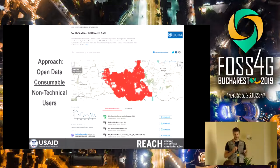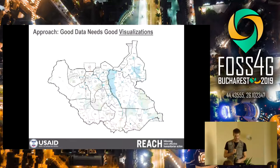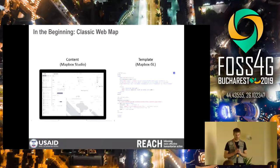Really what I want to talk about is how do you take GIS data — open GIS data — and package it in a way that is consumable by people in low-bandwidth and offline environments: how to go from your starter map to a nice polished package. I also want to talk about making data more consumable for non-technical users. Really good data needs good visualizations to communicate what it says to the end user.